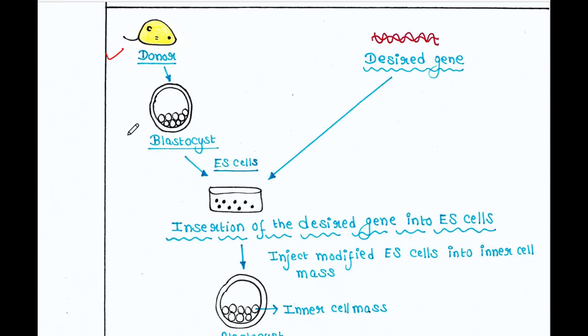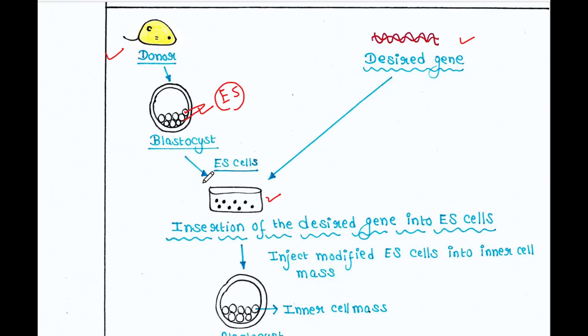So again we have the donor mouse here, which is pregnant, and we can isolate the blastocyst stage embryo from this donor. In the blastocyst there are embryonic stem cells, or ES cells. We can isolate these cells from the blastocyst and put them into in vitro culture. You also have the desired gene, already isolated from an organism, and you mix this desired gene with the embryonic stem cells in the in vitro culture so that the desired gene is now inserted into the embryonic stem cells.